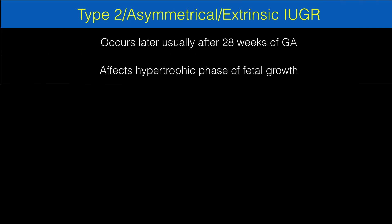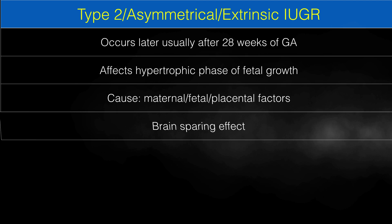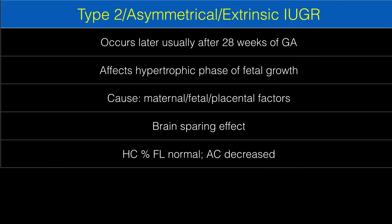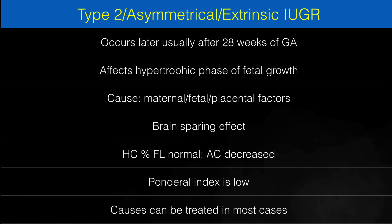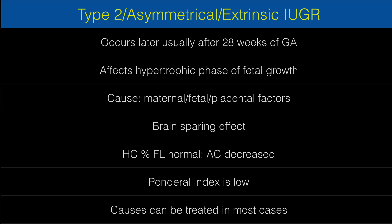Type 2, or asymmetrical or extrinsic intrauterine growth restriction, has the following characteristic features: it occurs later, usually after 28 weeks of gestational age, and affects the hypertrophic phase of fetal growth. Causes are maternal, fetal, or placental factors. There is a brain-sparing effect, which will be discussed later. Parameters like head circumference and femur length are normal, whereas abdominal circumference is characteristically decreased. Ponderal index is low. Causes can be treated in most cases.